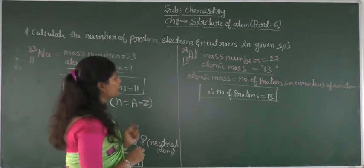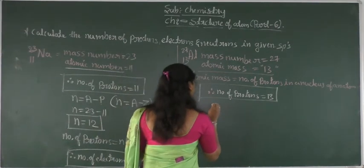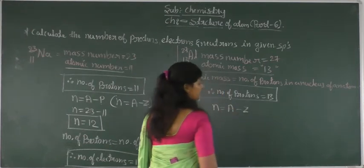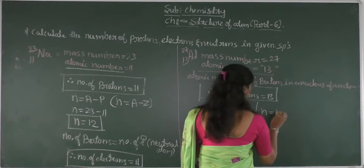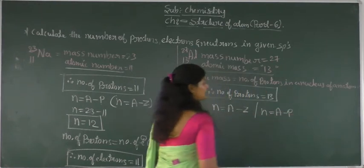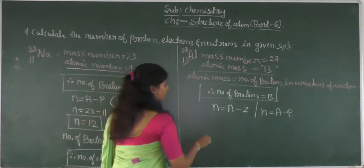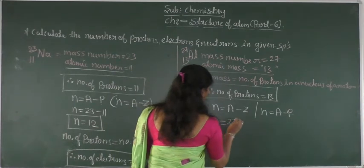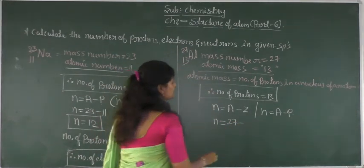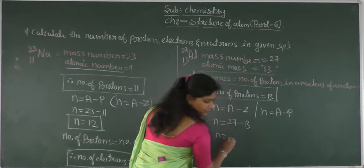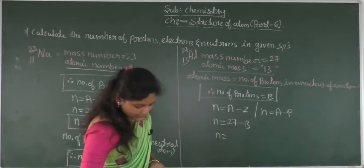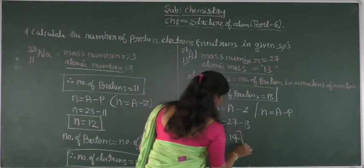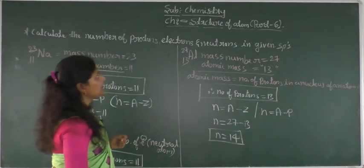Next we find the number of neutrons. Using the formula N equals A minus Z, or N equals A minus P: N equals 27 minus 13, so the number of neutrons is 14. This is the number of neutrons present in aluminium.